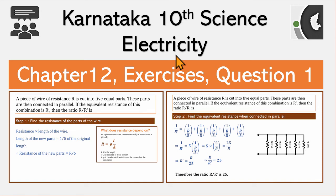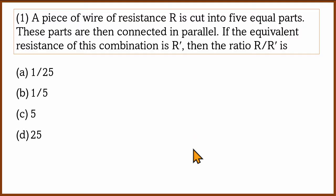In the electricity chapter, one question is solved. The question is: one wire has resistance R.